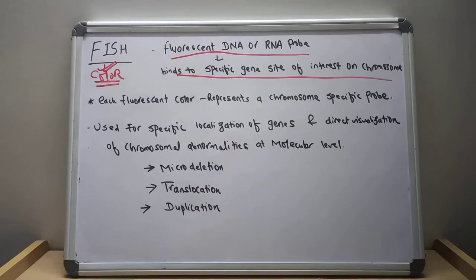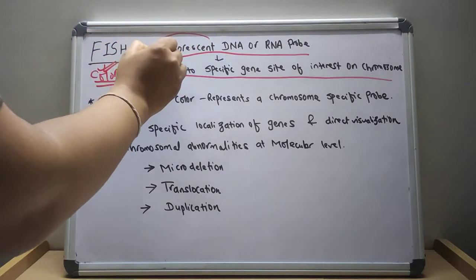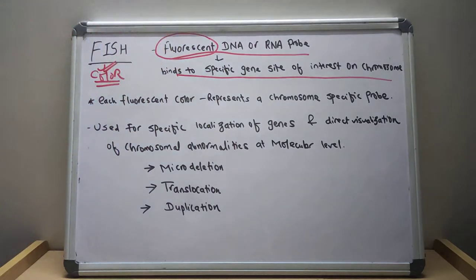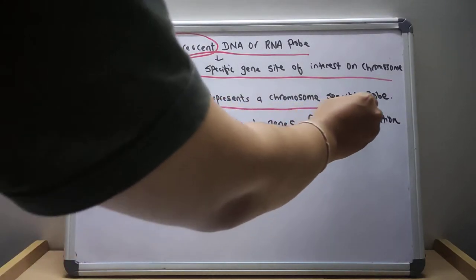Each fluorescent color represents a chromosome-specific probe. The individual fluorescence gives color to individual chromosomes, so each fluorescent color represents a specific chromosome probe.